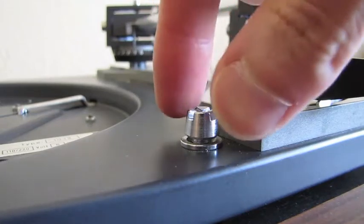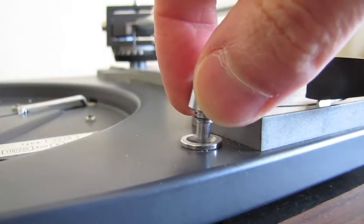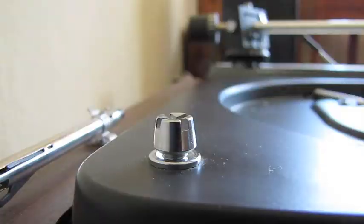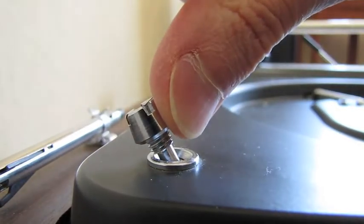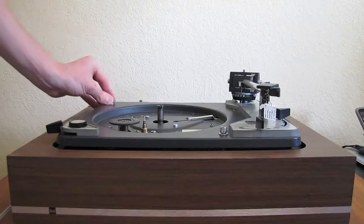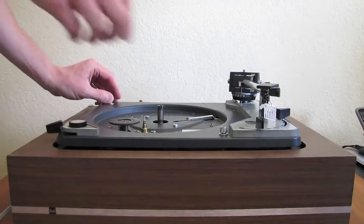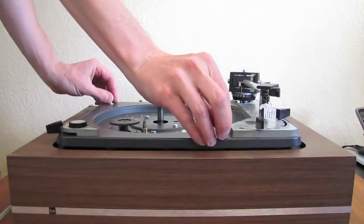Before separating the turntable from the base, lift and tilt the mounting screws so that the heads face away from the center. While holding both mounting screws, lift the turntable from the base.